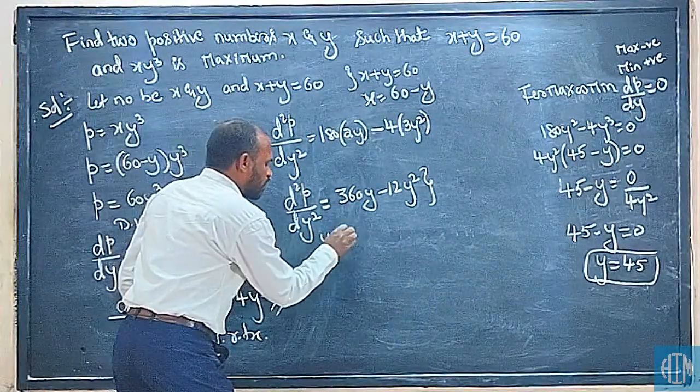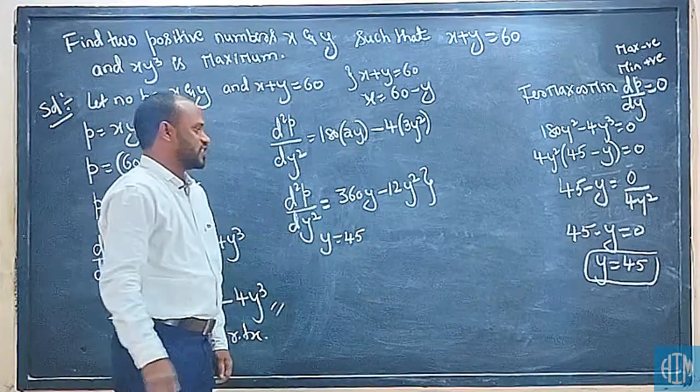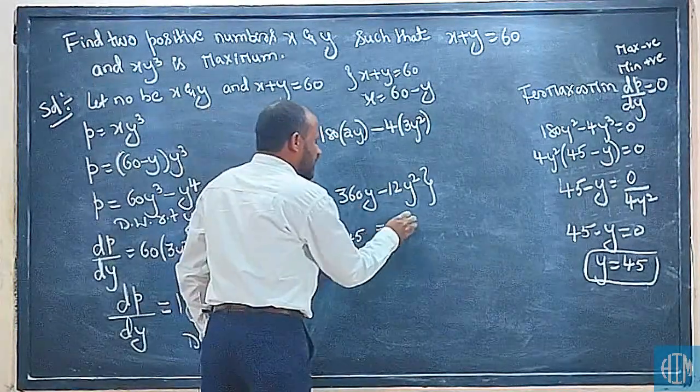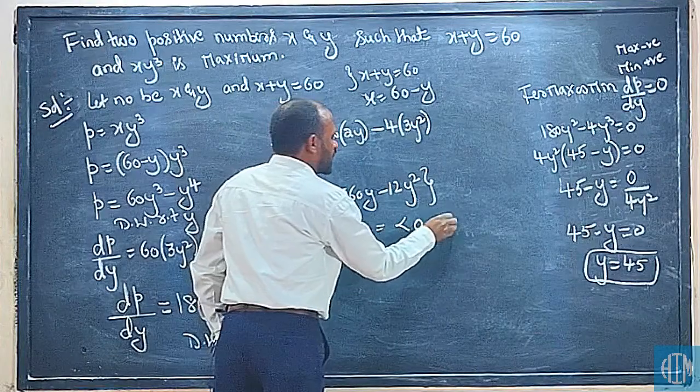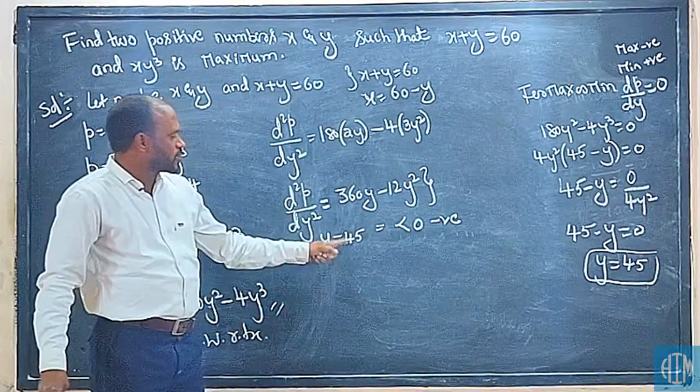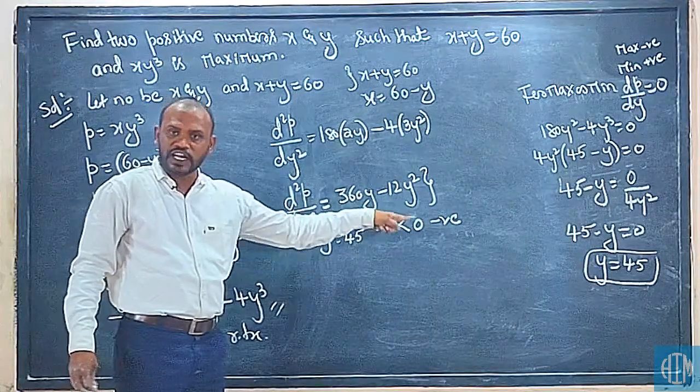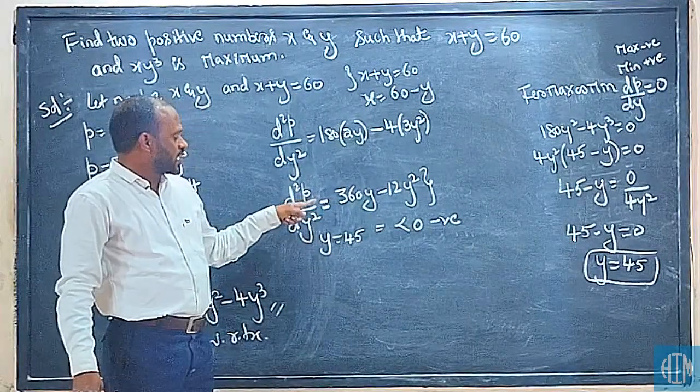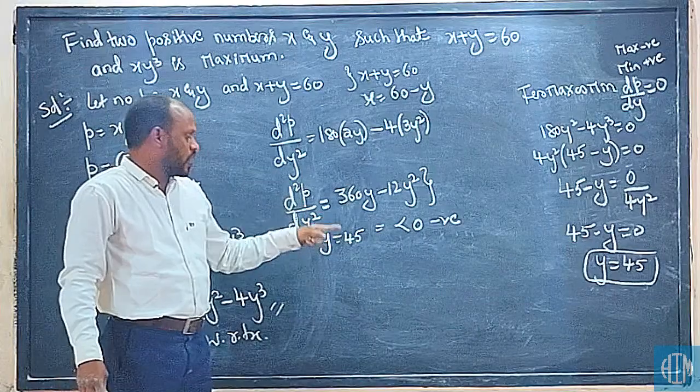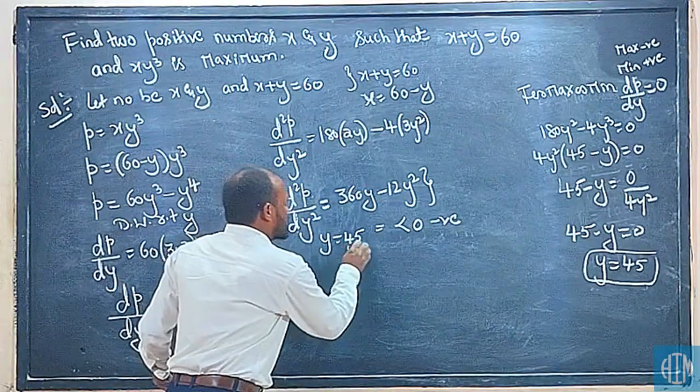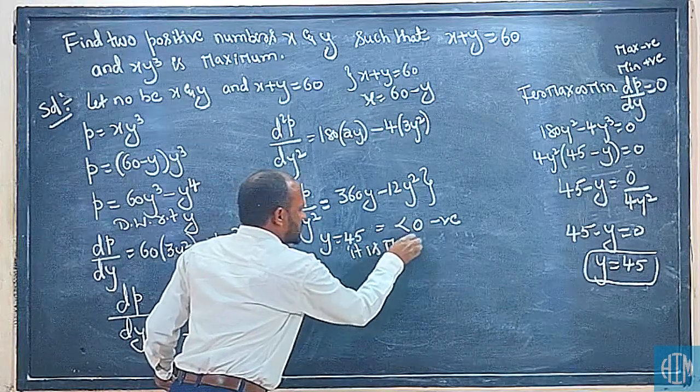If you substitute y value 45 into the second derivative, you will get less than zero. Negative you will get. If you substitute y equals 45 and simplify, you get a negative answer. Second derivative test: if you substitute the y value and the answer is negative, it means it is maximum.